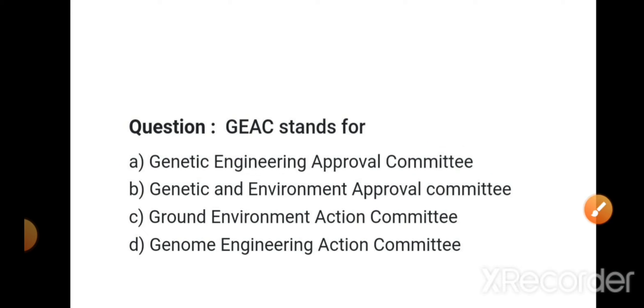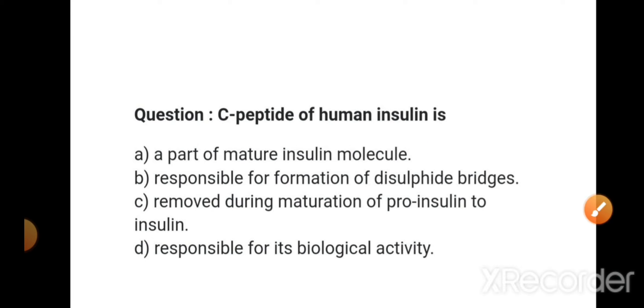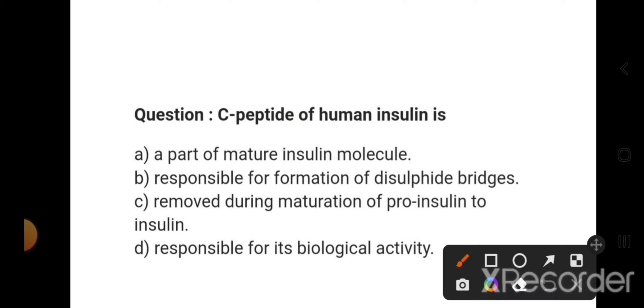Human insulin: in pro-insulin there is A chain, B chain, and C chain. But when pro-insulin converts to insulin, the C chain is eliminated. Now let's see the options: the C peptide is part of mature insulin - this is wrong. It's responsible for formation of disulfide bridges and is removed during maturation of pro-insulin to insulin. This is the right option.